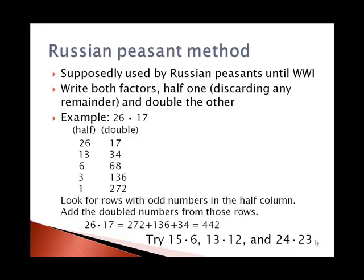Now we look for rows that have odd numbers in the half column — those would be the rows with 13, 3, and 1. We take the numbers from the doubled column and add those together to get the product: 442. This works because when we're taking half of one factor and doubling the other, we don't change the product. 26 times 17 is the same as 13 times 34. However, 13 times 34 is different from 6 times 68 because we ignored that remainder. So by taking these odd rows, we're picking up those remainders we left off.